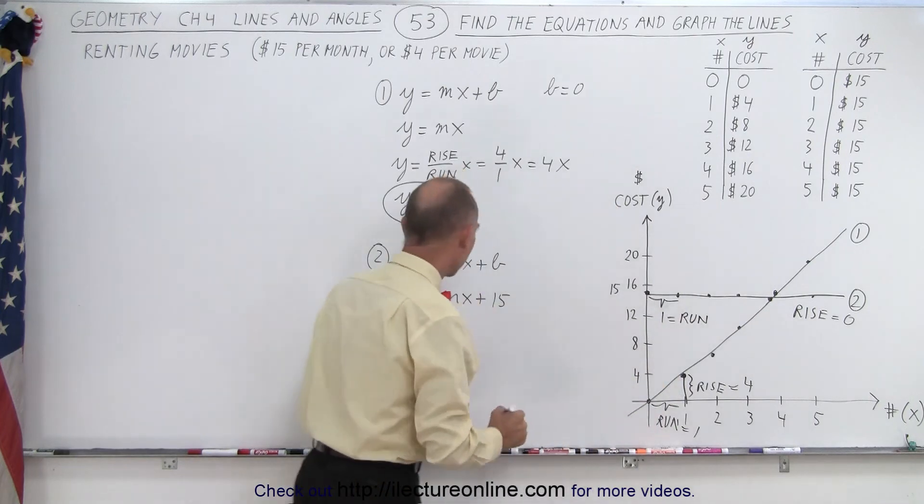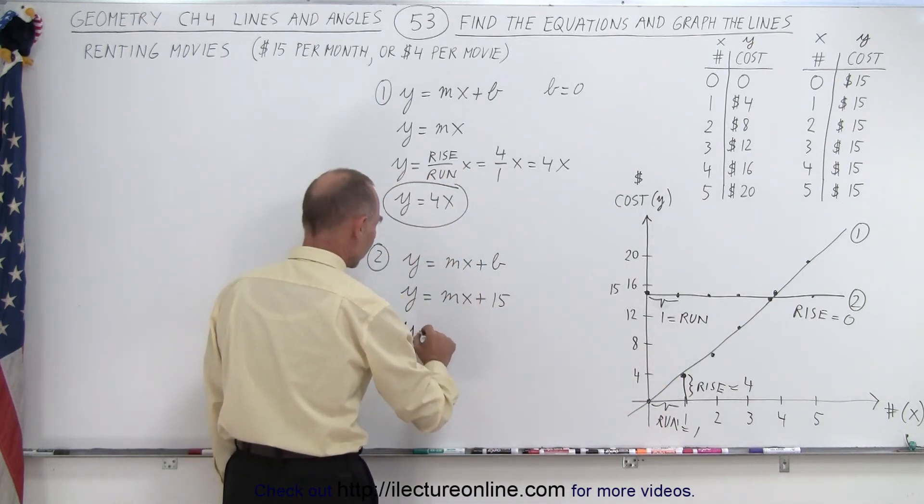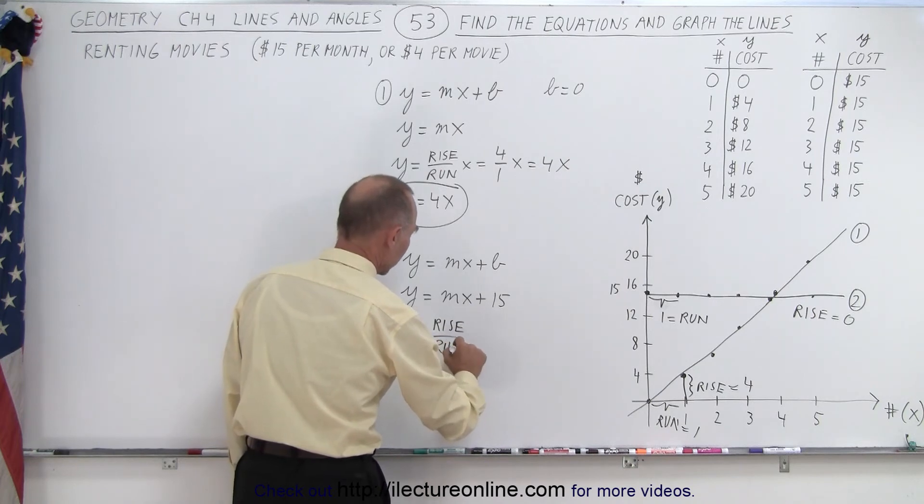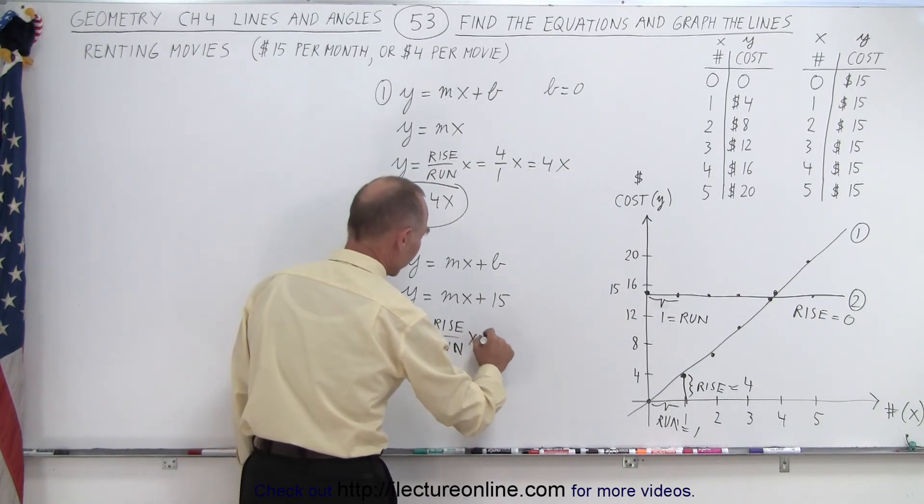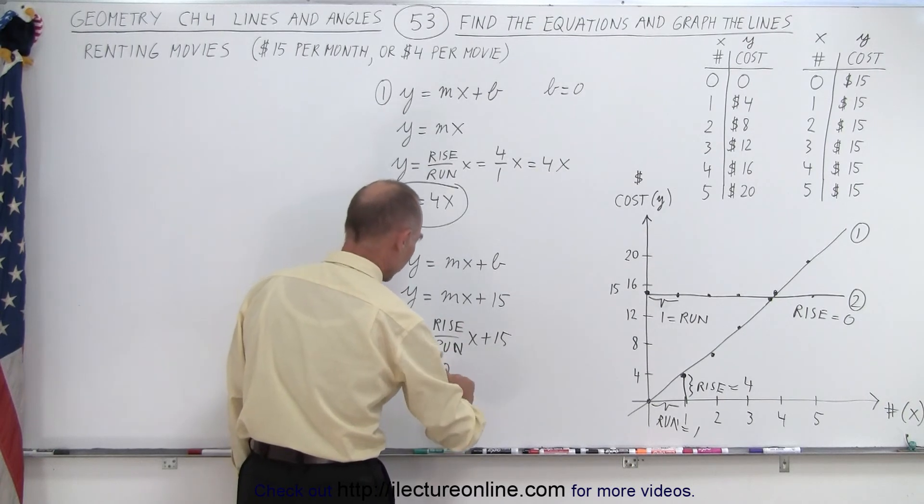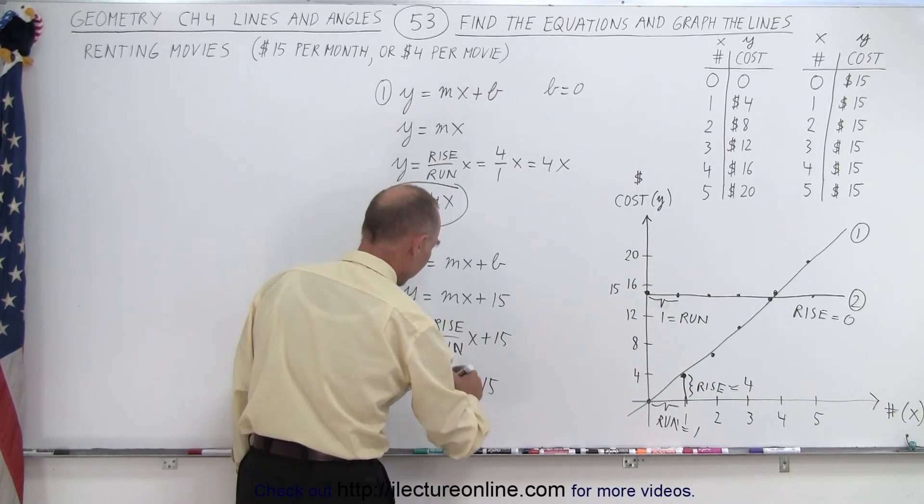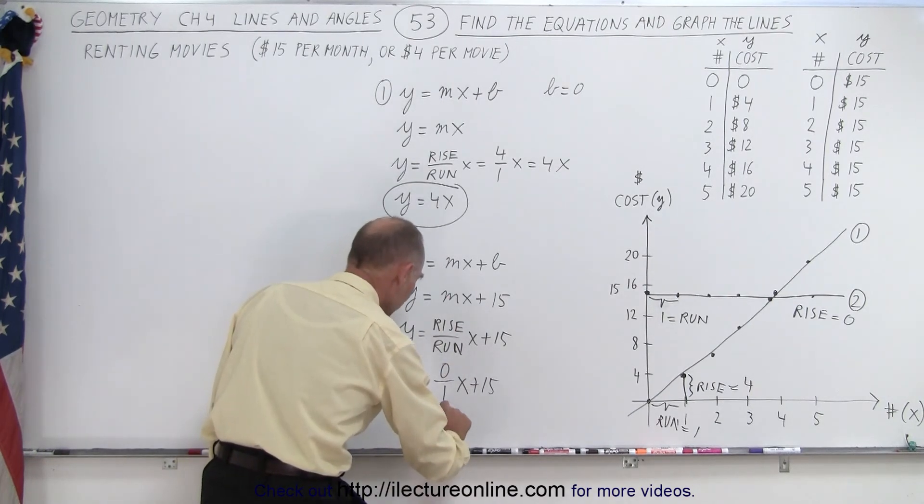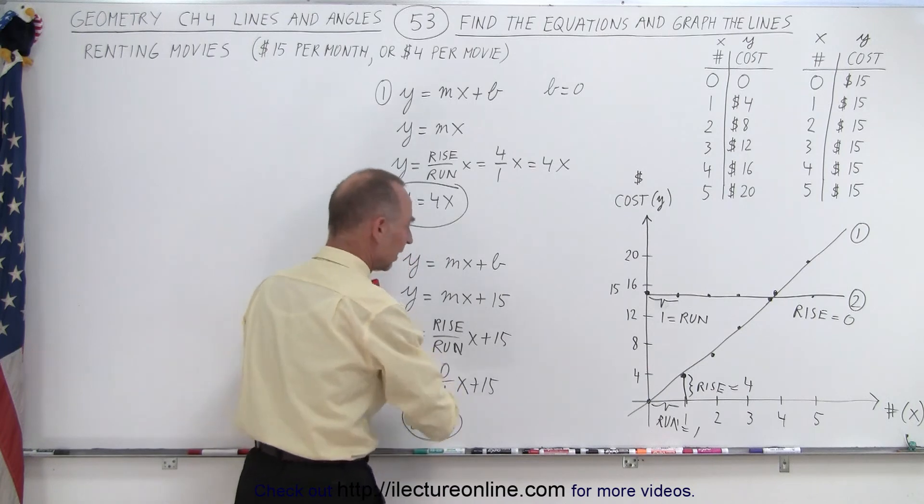So here, I can see that y is equal to the rise over the run times x plus fifteen. And in this case, y is equal to the rise, which is zero over the run of one, x plus fifteen. And of course, zero times x is still zero, or y equals fifteen. And that's the equation of the second line.